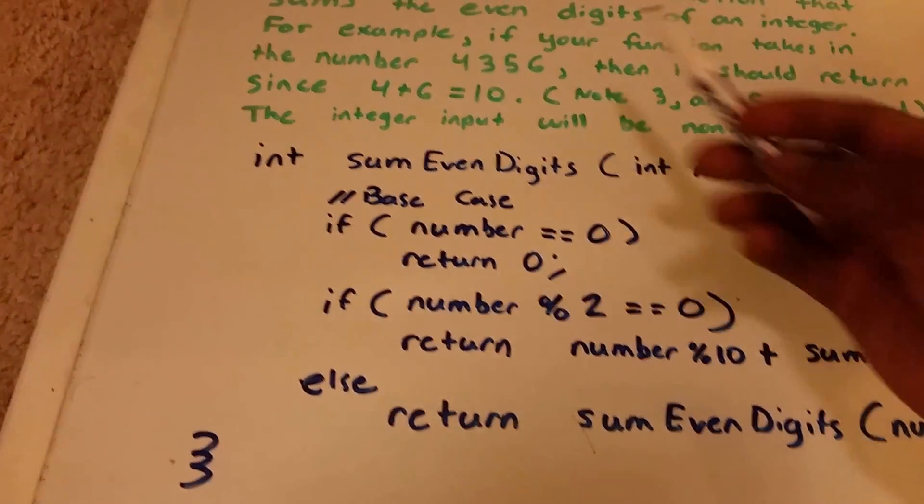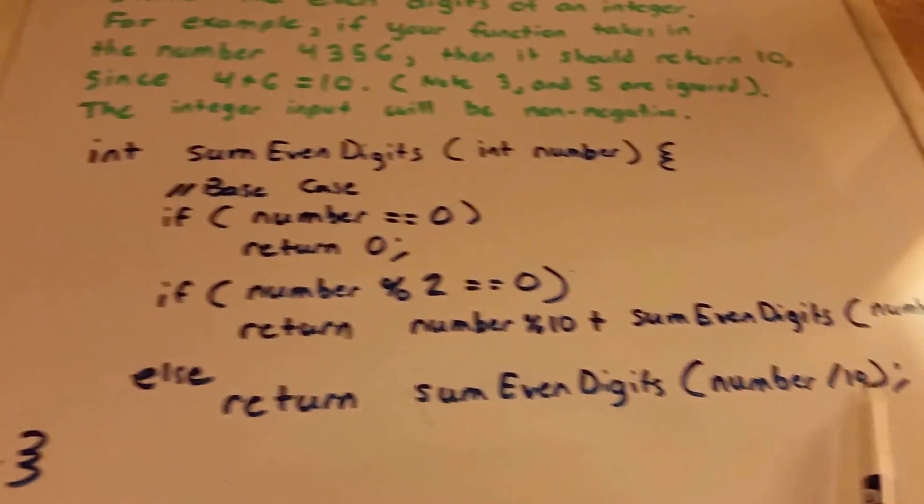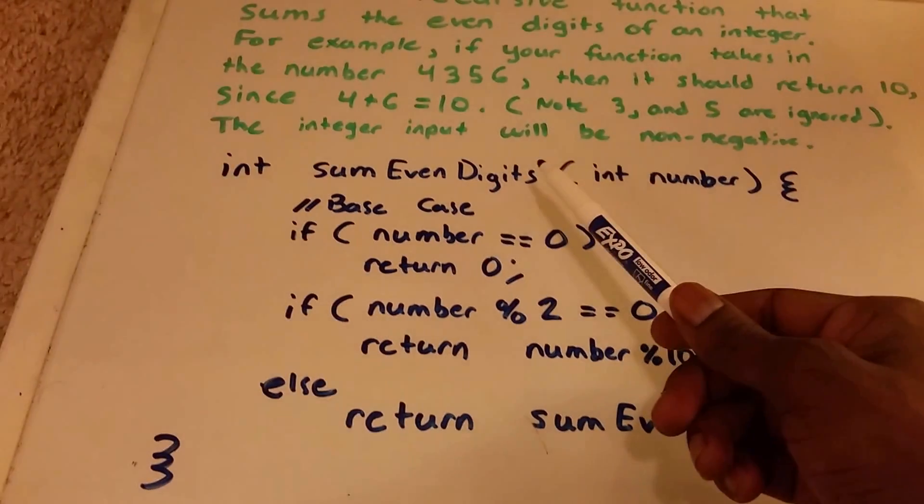We're going to go through. We have 43. 43 is not even, it's odd. So you do 43 divided by 10 and we get 4. So we go through again.